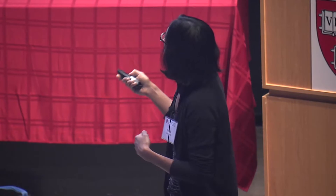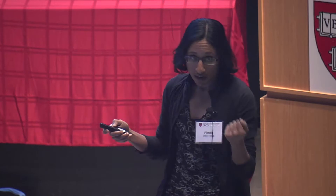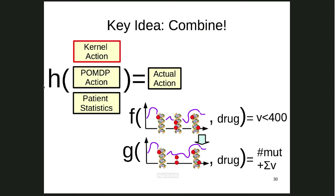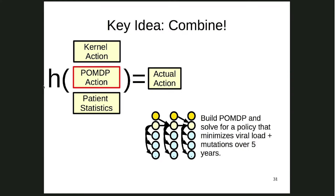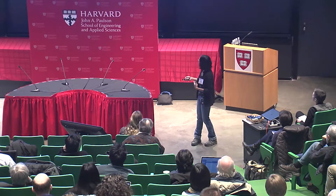How do we actually combine them? The kernel or neighborhood-based approach gives an output — does the viral load go down immediately, or stay down long-term? The model produces its preferred action. Then, based on patient statistics — how close the neighbors are — we decide on the actual action. All of this is trained end-to-end using automatic differentiation and modern frameworks, which wasn't possible a couple of years ago.